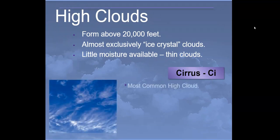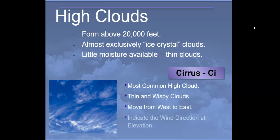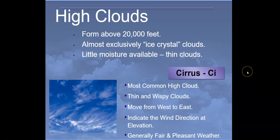High clouds form above 20,000 feet and are almost exclusively ice crystal clouds. There's very little moisture available up there, so they're very thin. The first type is the cirrus cloud, abbreviated CI. These are the most common high clouds — very thin and wispy, moving from west to east. They indicate wind direction at that elevation and generally tell you weather will be fair and pleasant.